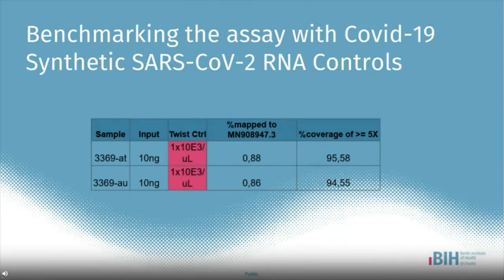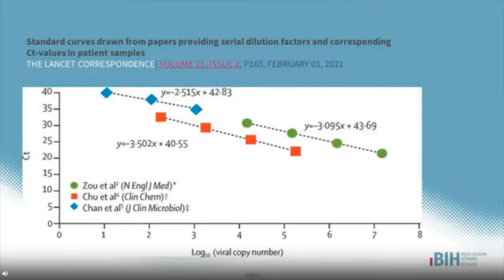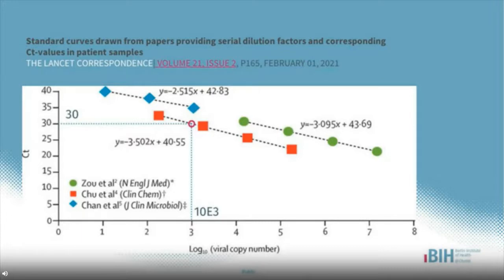In order to validate our automated workflow for SARS-CoV-2 genome sequencing, we utilized synthetic SARS-CoV-2 RNA controls from TWIST Biosciences. At the input of 10 nanograms and as little as 10 to the power of 3 viral sequence copies, we could still cover more than 94% of the coronavirus genome with coverage of at least 5 reads. A recent publication in the Lancet Journal reported standard curves providing serial dilution factors and corresponding CT values in patient samples. The controls containing 10^3 copies would technically correspond to a CT value of 30 in patient samples.